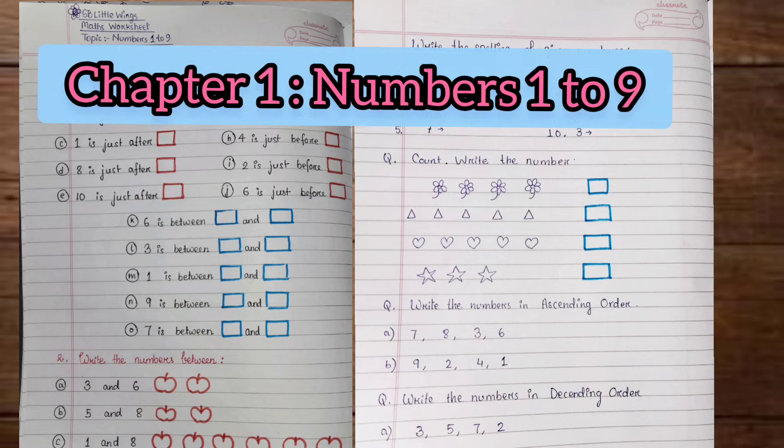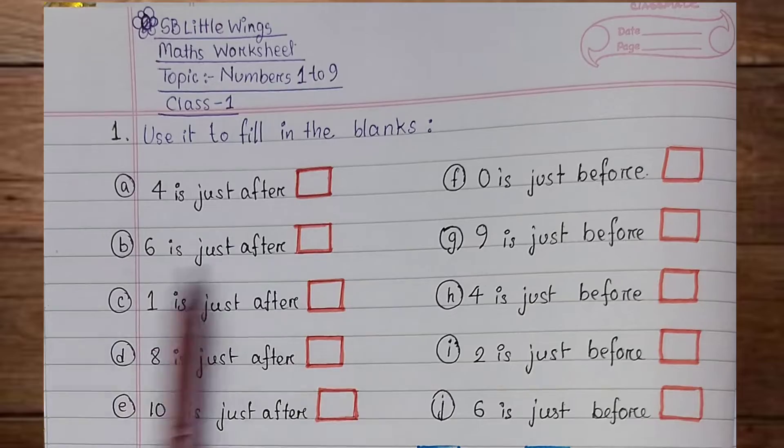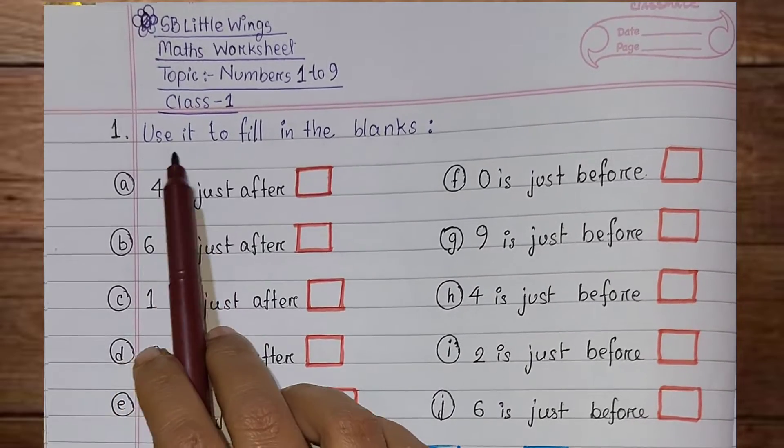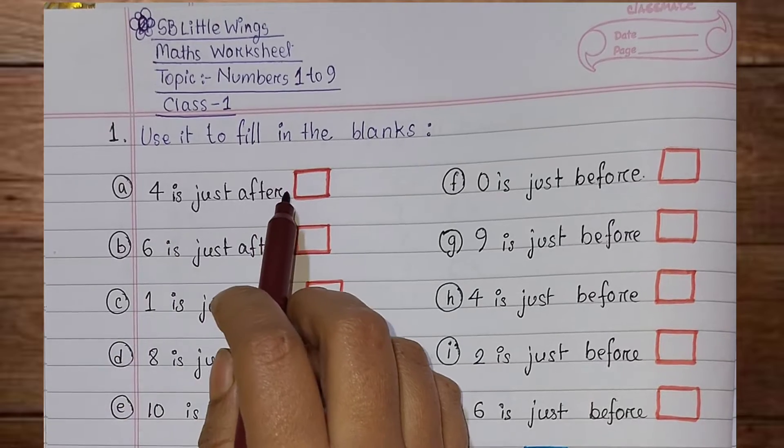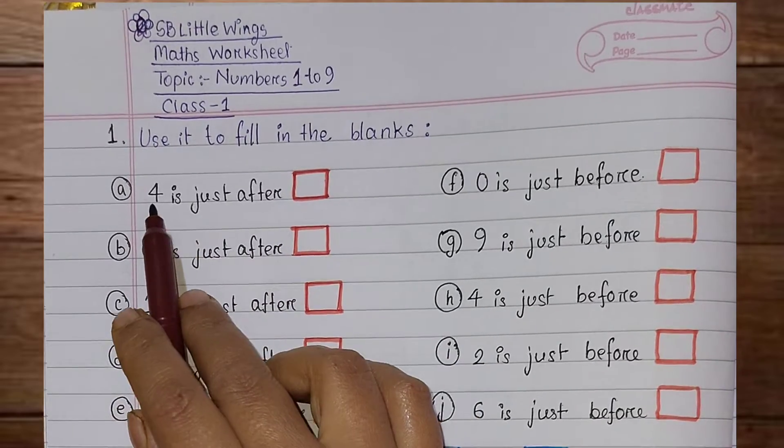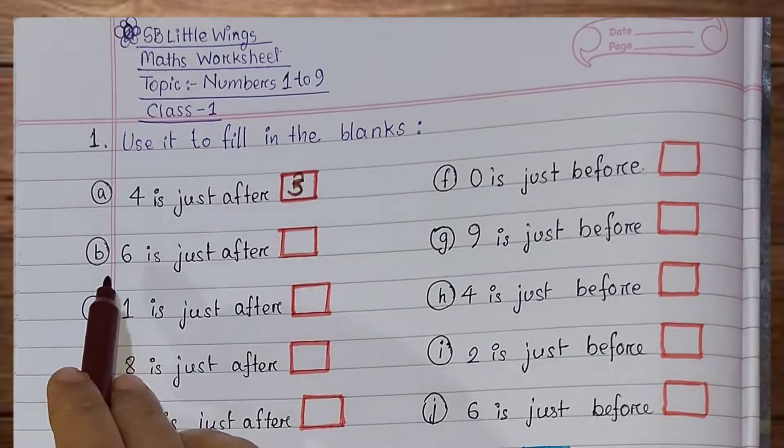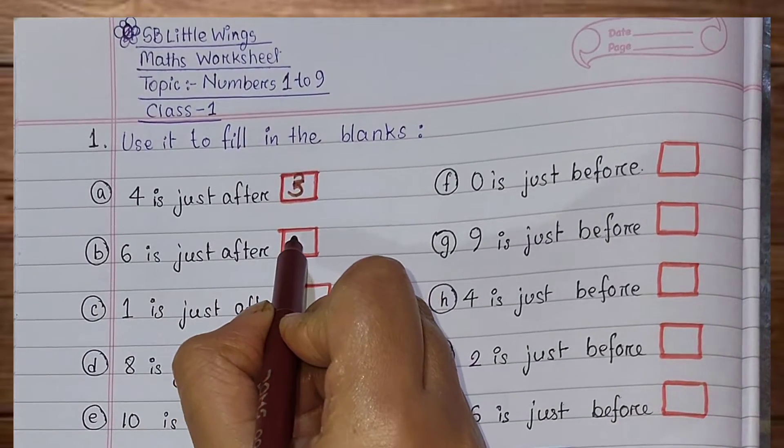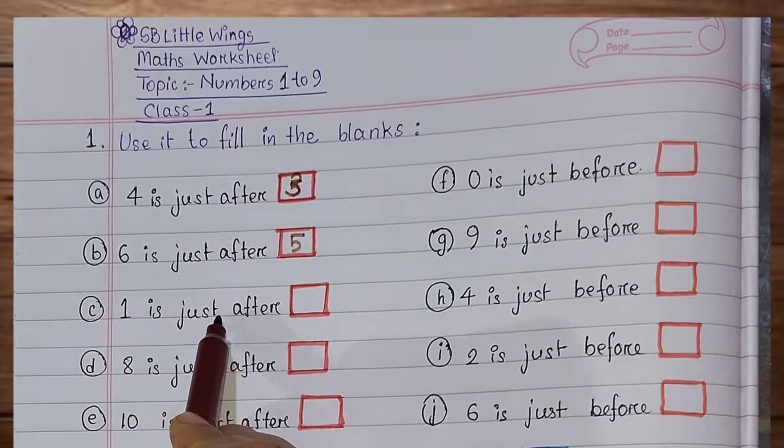Most of the students make common mistakes with just after. That means the question says the number before the number. 4 is just after 3. Next, 6 is just after 5.